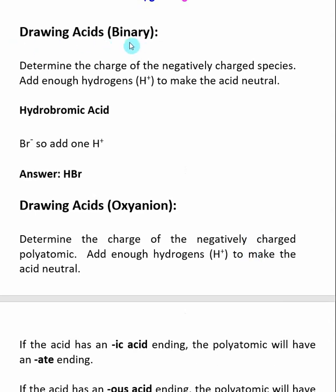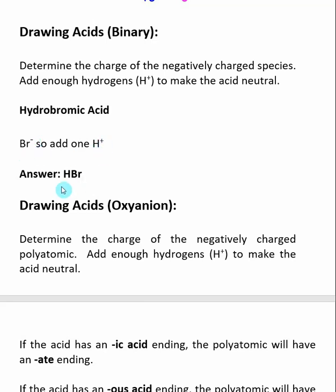When drawing acids, you can tell you're dealing with a binary acid because the first word is hydro. In this case, the negatively charged species is expected to be an element. You find the charge on that element and then add enough hydrogens to make the acid neutral. For hydrobromic acid, hydro tells me it's a binary acid. Removing the -ic acid ending leaves brom, so the other element is bromine. Bromine is in the main group with a -1 charge, so I only need one H+. The answer is HBr.